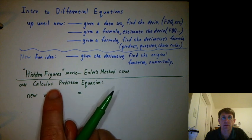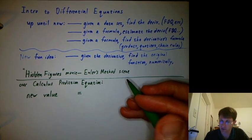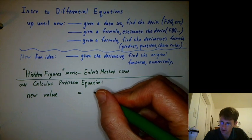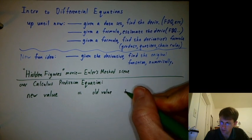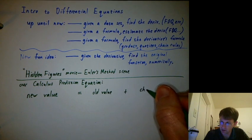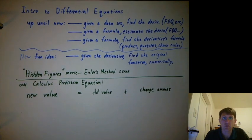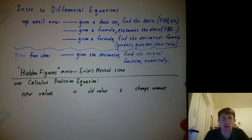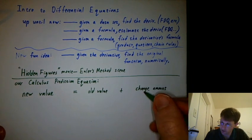So, let's think of what's our calculus prediction equation. How do I predict a new value? Do you remember what this was? It was basically the old value, or you could say the current value, plus the change amount. And what's another way of writing the change amount? It's rate of change times how long things had to change.